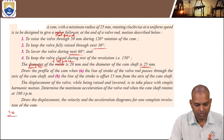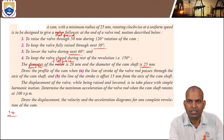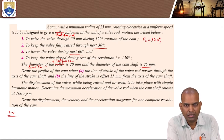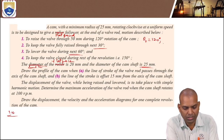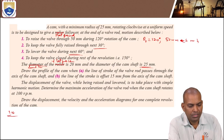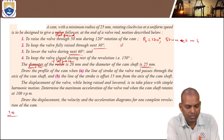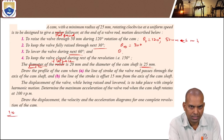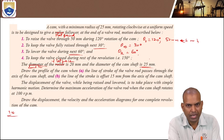To raise the valve rod through 50 millimeters during 120 degrees of cam rotation — this is the outstroke. The outstroke angle is 120 degrees, and the total lift of the follower during that stroke is 50 millimeters. Next, keeping the valve fully raised — that is the dwell during outstroke — is 30 degrees. The return stroke is 60 degrees, and the dwell during return stroke is 150 degrees.